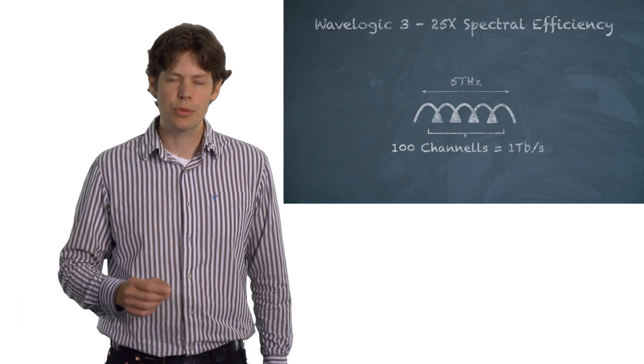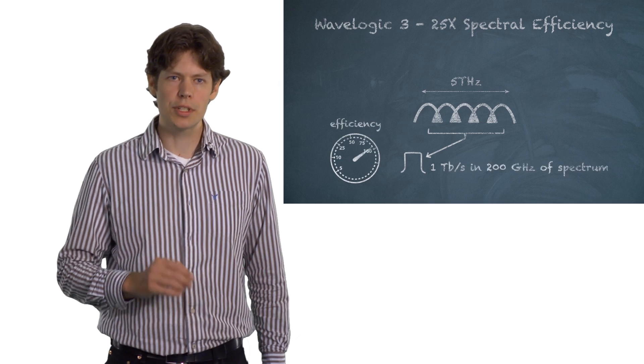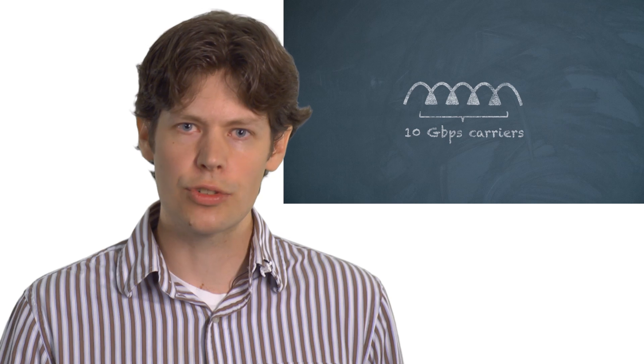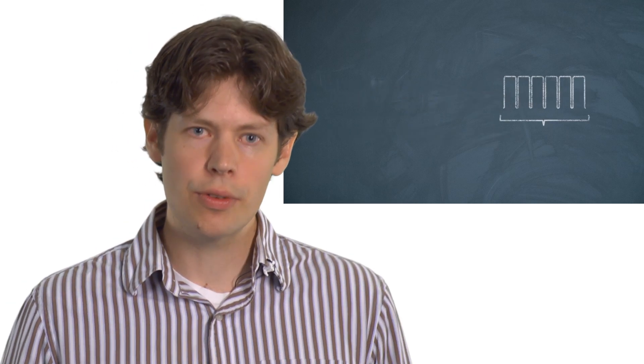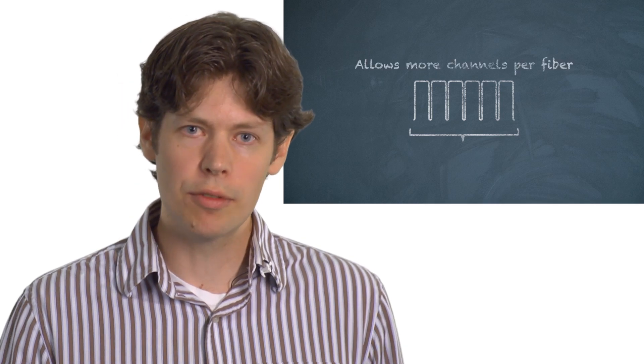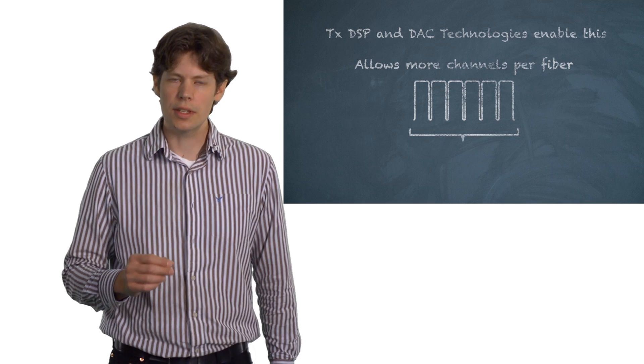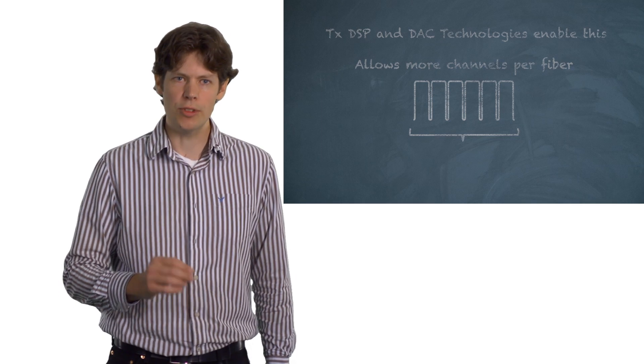In Siena's WaveLogic 3, we've achieved a 25-fold increase in the spectral efficiency of one terabit per second transmission. An important tool for achieving high spectral efficiency is to have control over the spectral shape. With this, one can decrease the width of the channel spectrum, allowing more channels per fiber with levels of crosstalk lower than would otherwise be possible. The advanced digital signal processing in the transmitter with the digital analog converter in WaveLogic 3 enable this.